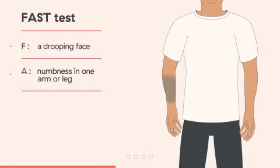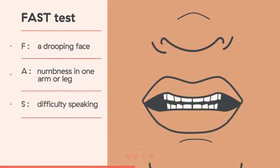Numbness in one limb. The casualty has weakness or numbness in one arm or leg. Difficulty speaking. The casualty has trouble speaking.